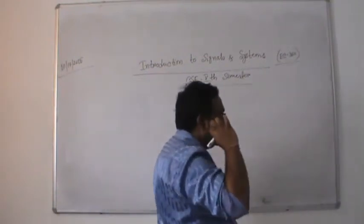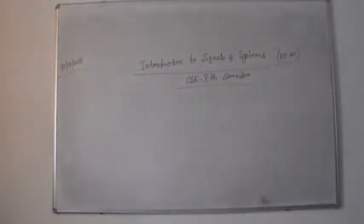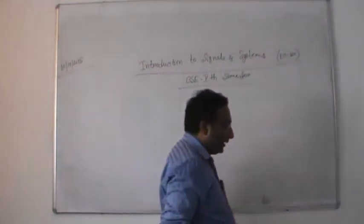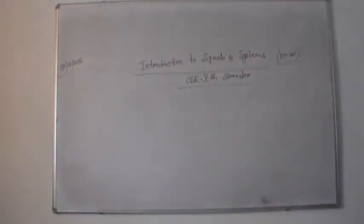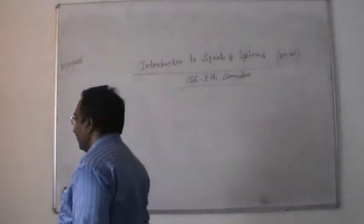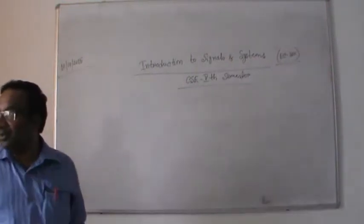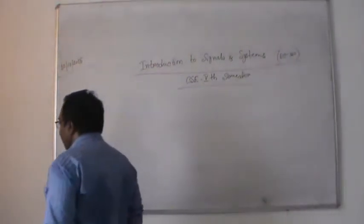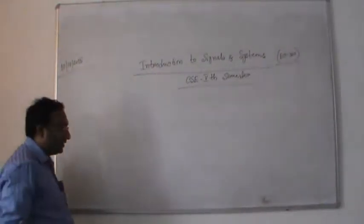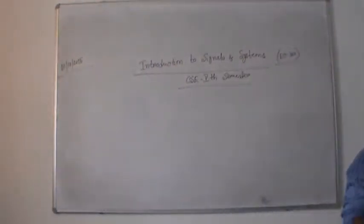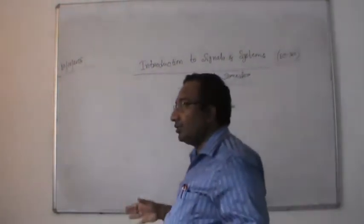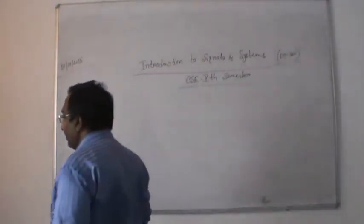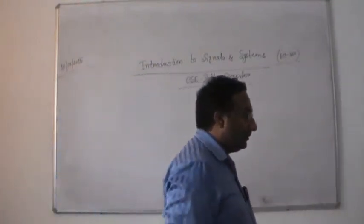In Introduction to Signals and Systems, we will first deal with what is a signal and what is a system. After that, there are classifications of signals along with their definitions, examples, and mathematical expressions, and classification of systems along with their definitions. Then we will cover how we can represent different types of signals and systems, including mathematical structures like differential equations, difference equations, and state-space variables including state-space equations.